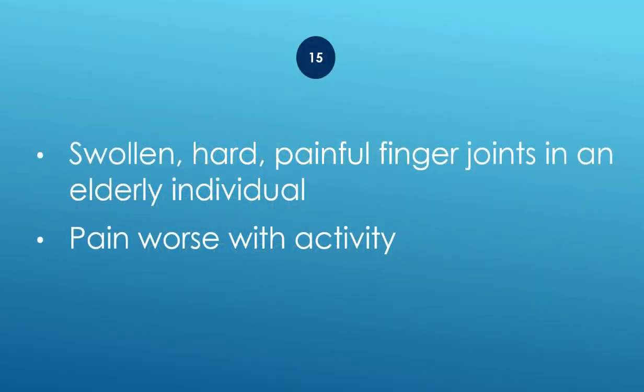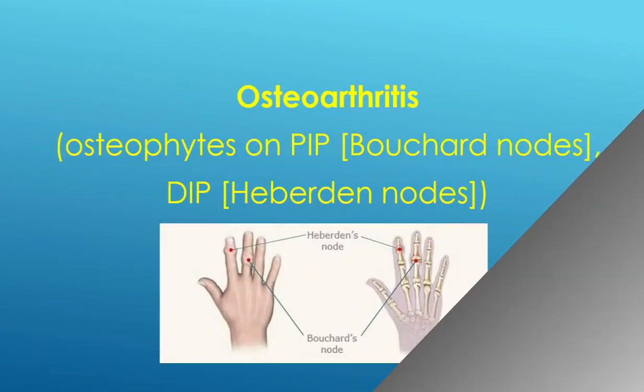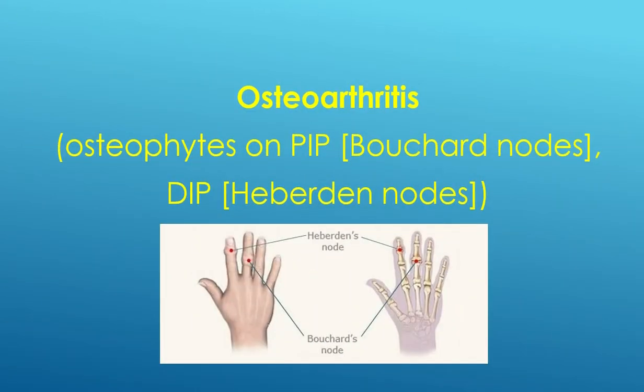Swollen and hard painful finger joints in an elderly individual, pain worse with activity — osteoarthritis. Osteophytes on PIP: Bouchard nodes; on DIP: Heberden nodes.